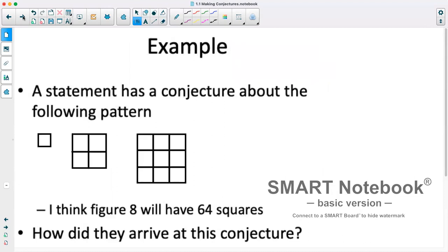So at this example, we have a statement that has a conjecture about the following pattern. Essentially, we have three figures. And the conjecture is, I think figure eight will have 64 squares. Now it's referring to the small squares inside it. And we want to figure out how they arrived at this conjecture. So we've got this figure, we have this figure, we have this figure, and by the time we get to figure eight, it's going to have 64 of these small squares in it.